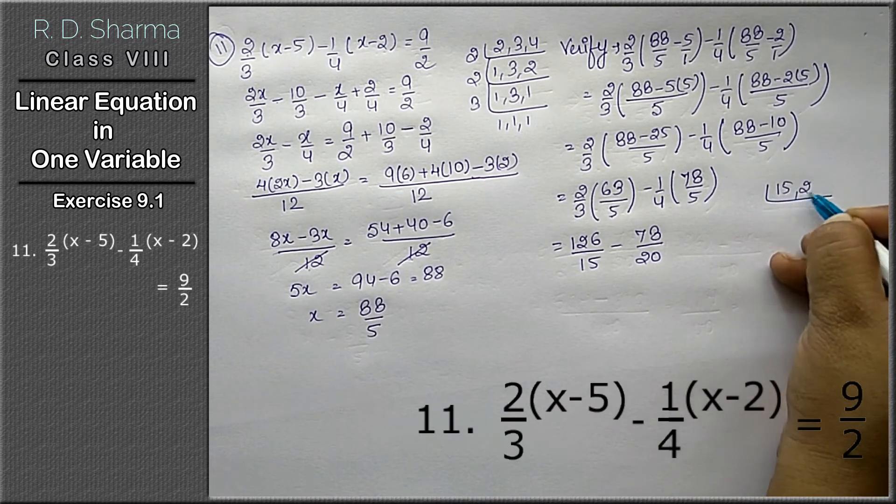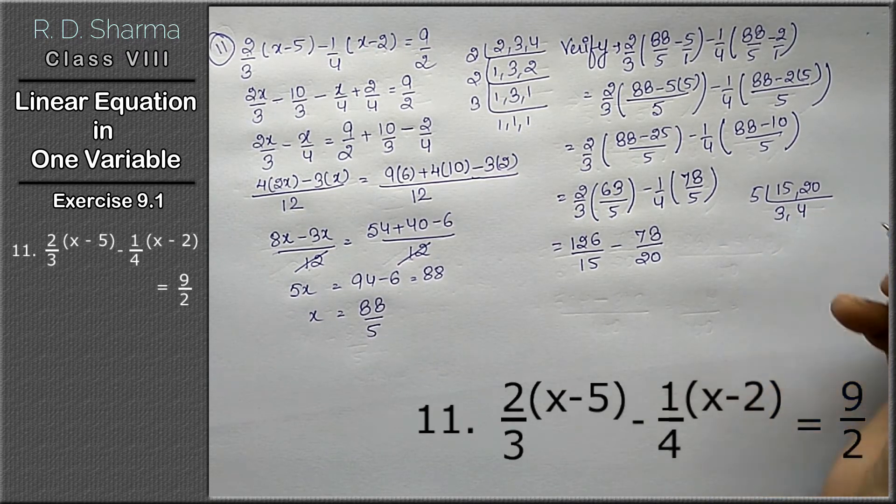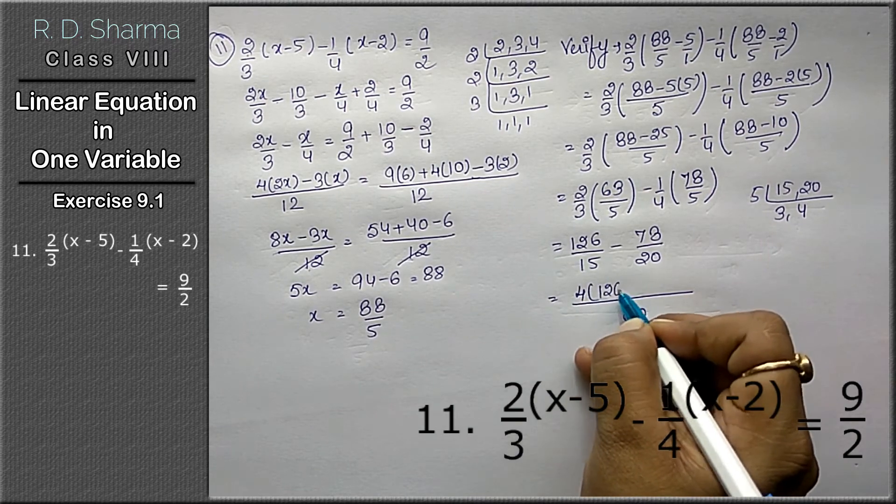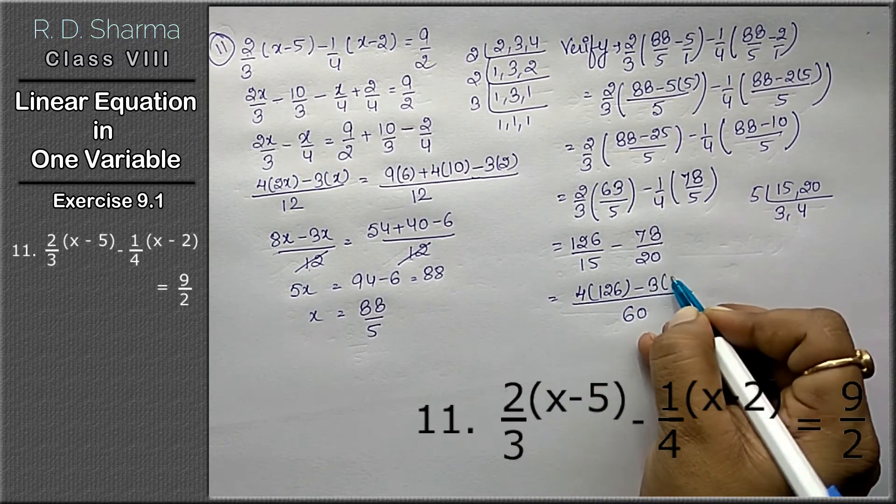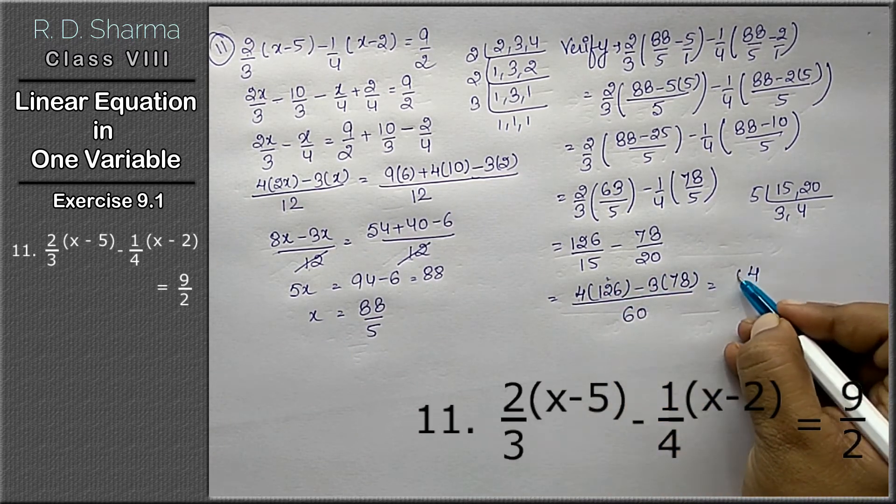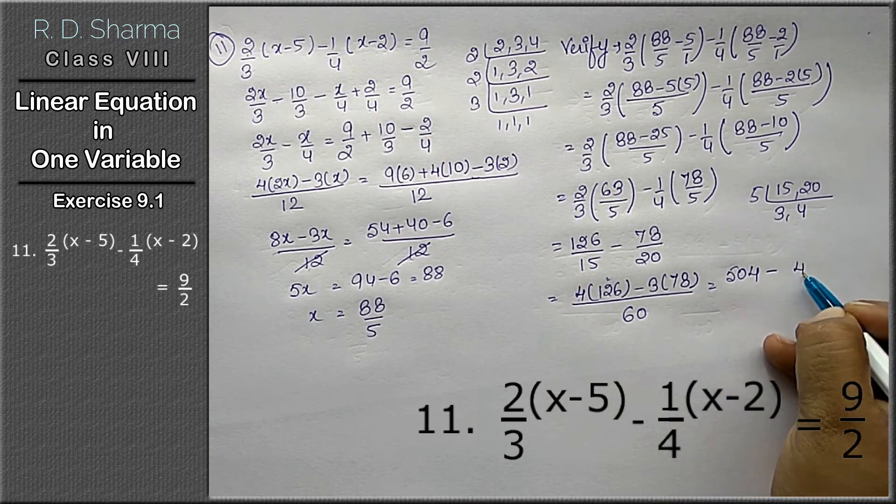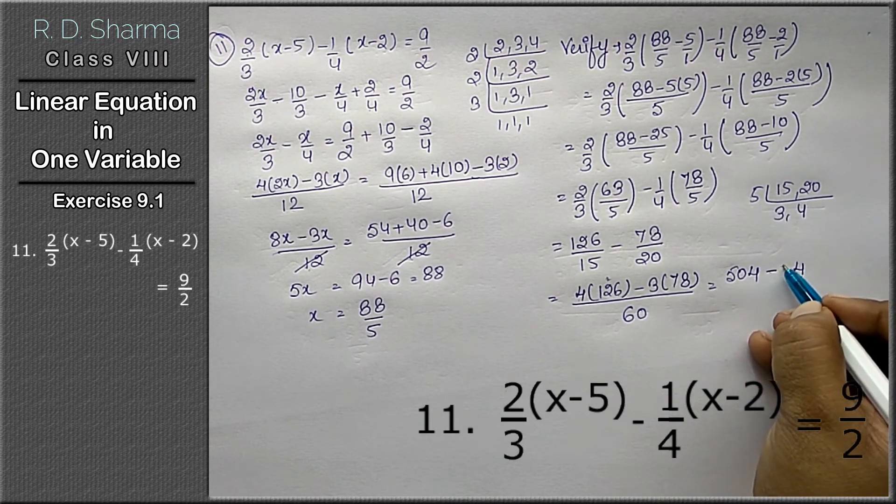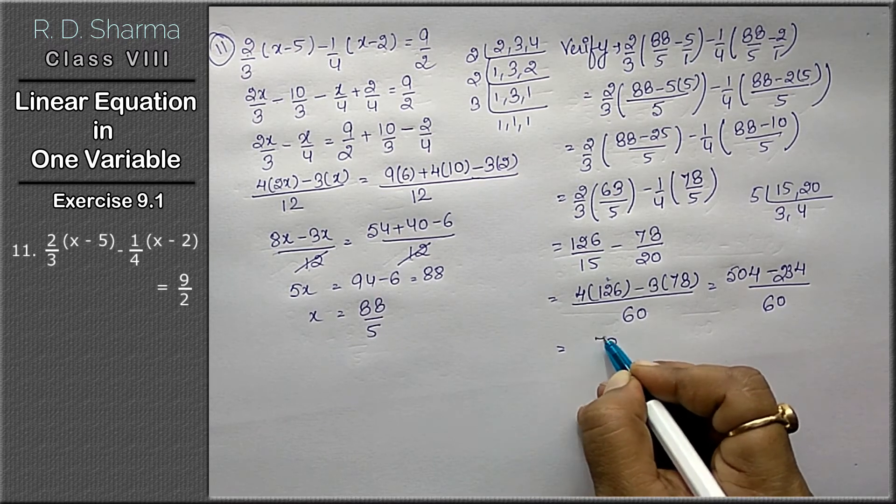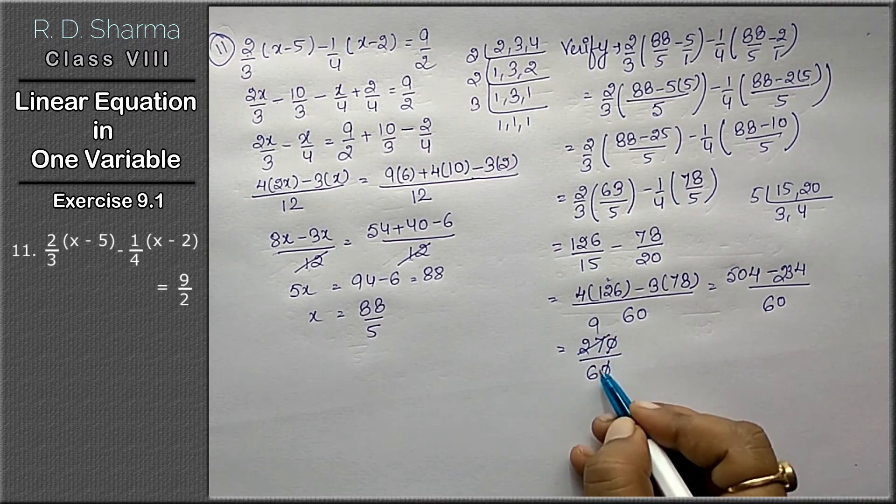LCM of 15 and 20 is 60. 60 is the LCM. Now 4 times 126 minus 3 times 78. 4 times 126 is 504 minus 234 upon 60. 504 minus 234 is 270 upon 60. Simplifying: 27 upon 6, which equals 9 upon 2.